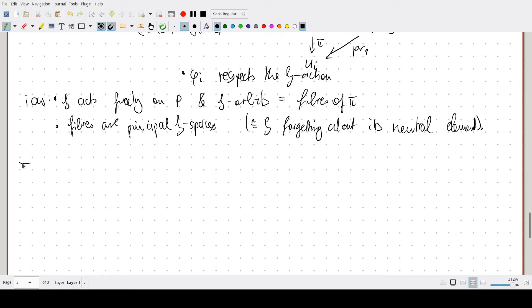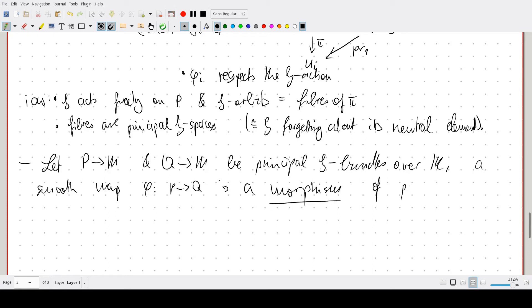And, I guess, the other part of the definition: let P and Q be principal G bundles. A smooth map phi from P to Q is a morphism of principal G bundles